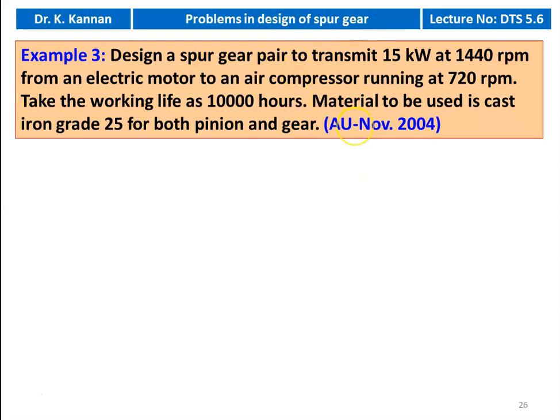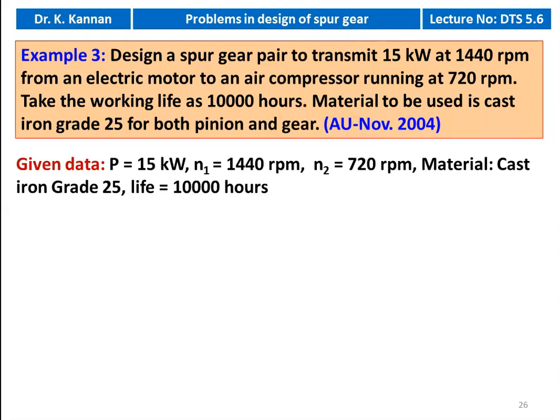Example number 3. The question appeared in the November 2004 question paper. Design a spur gear pair to transmit 15 kilowatts at 1440 RPM from an electric motor to an air compressor running at 720 RPM. Take the working life as 10,000 hours. Material to be used is cast iron grade 25 for both pinion and gear. Given data: power = 15 kW, pinion speed = 1440 RPM, gear speed = 720 RPM, material = cast iron grade 25, life = 10,000 hours.